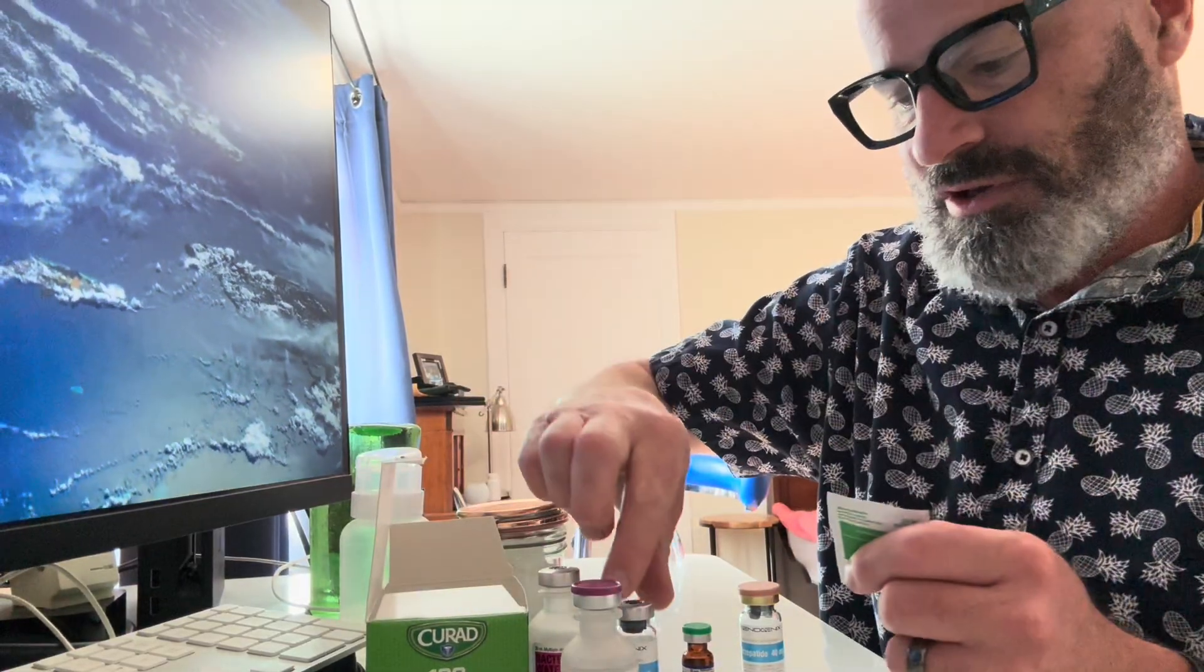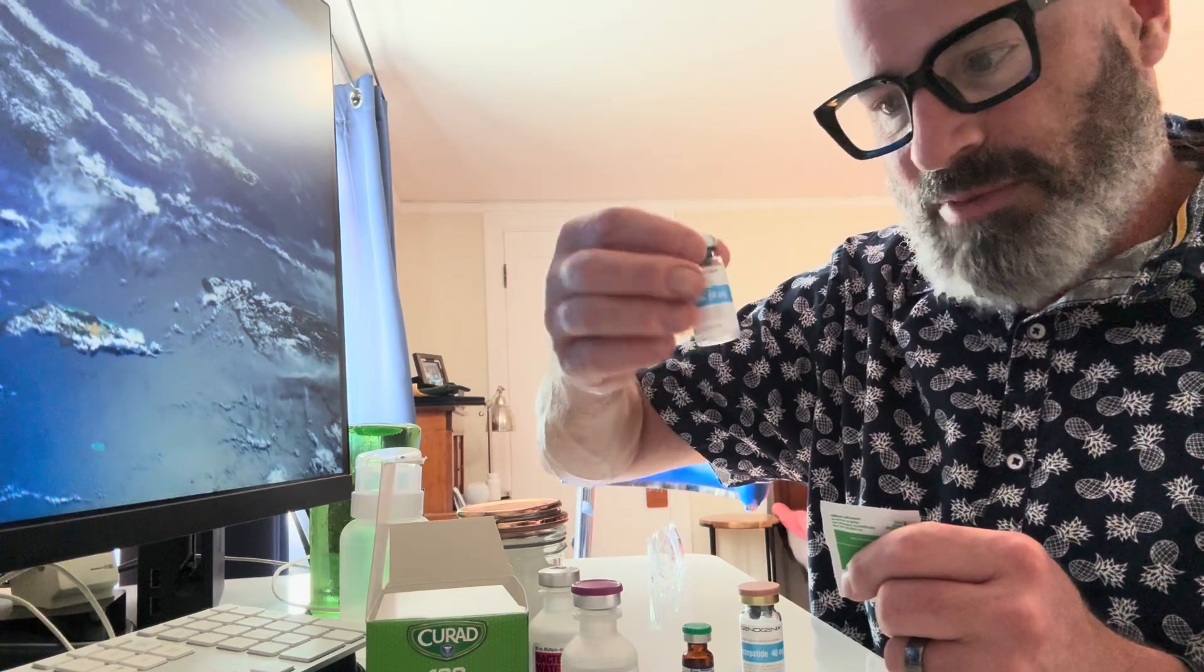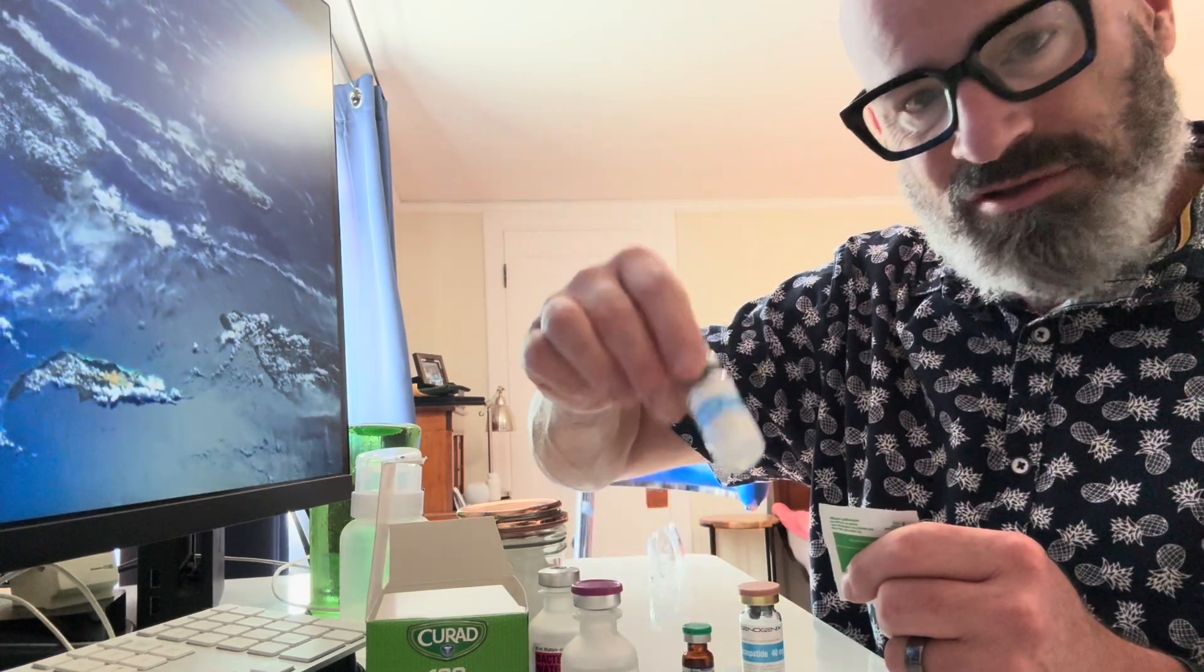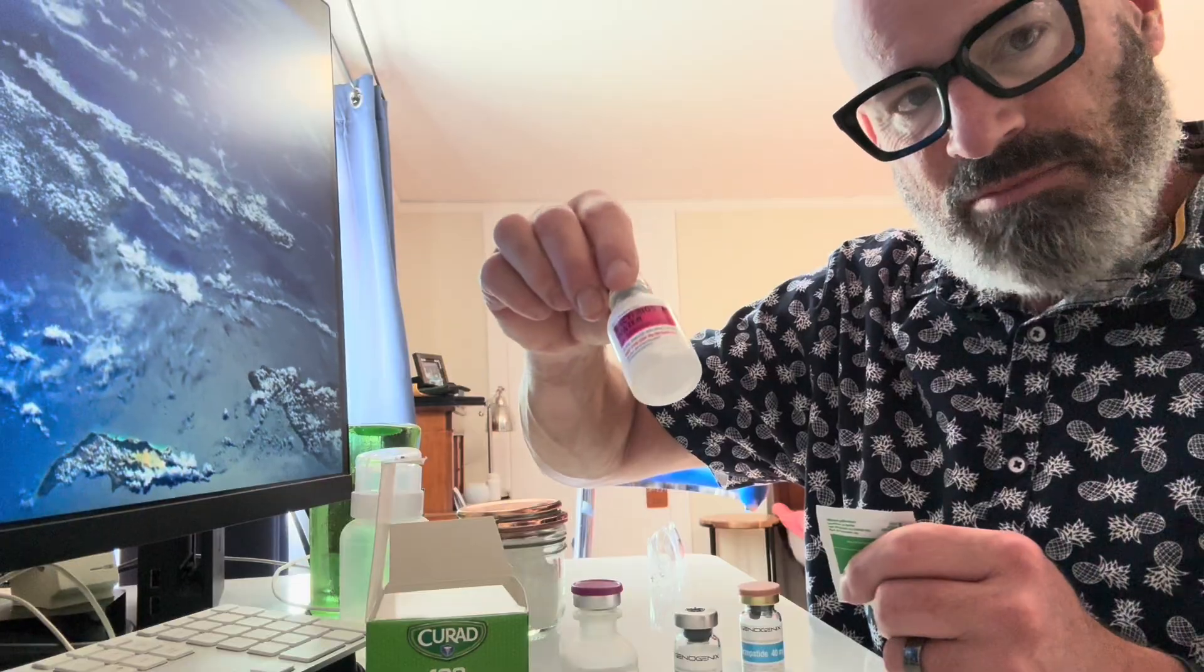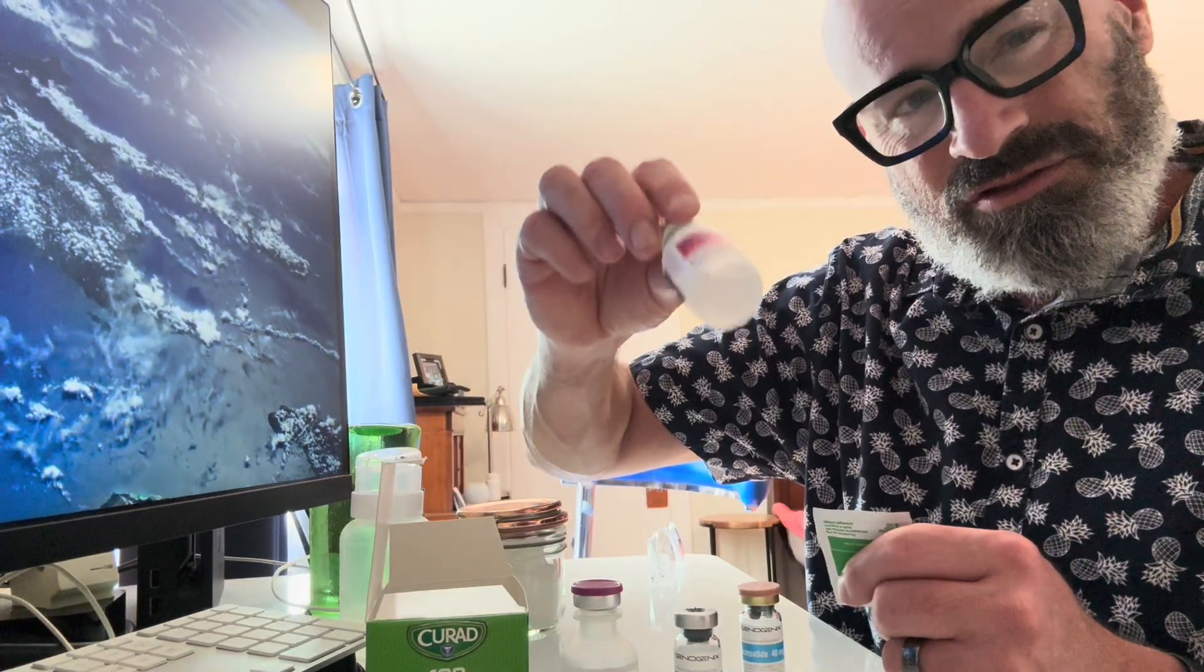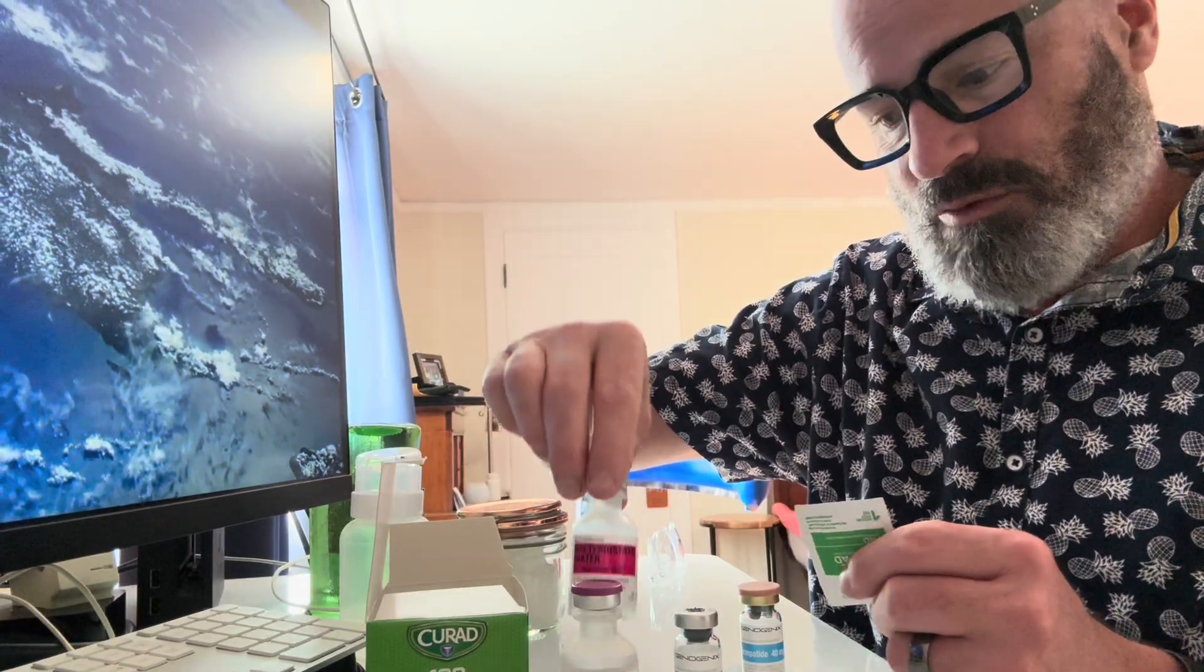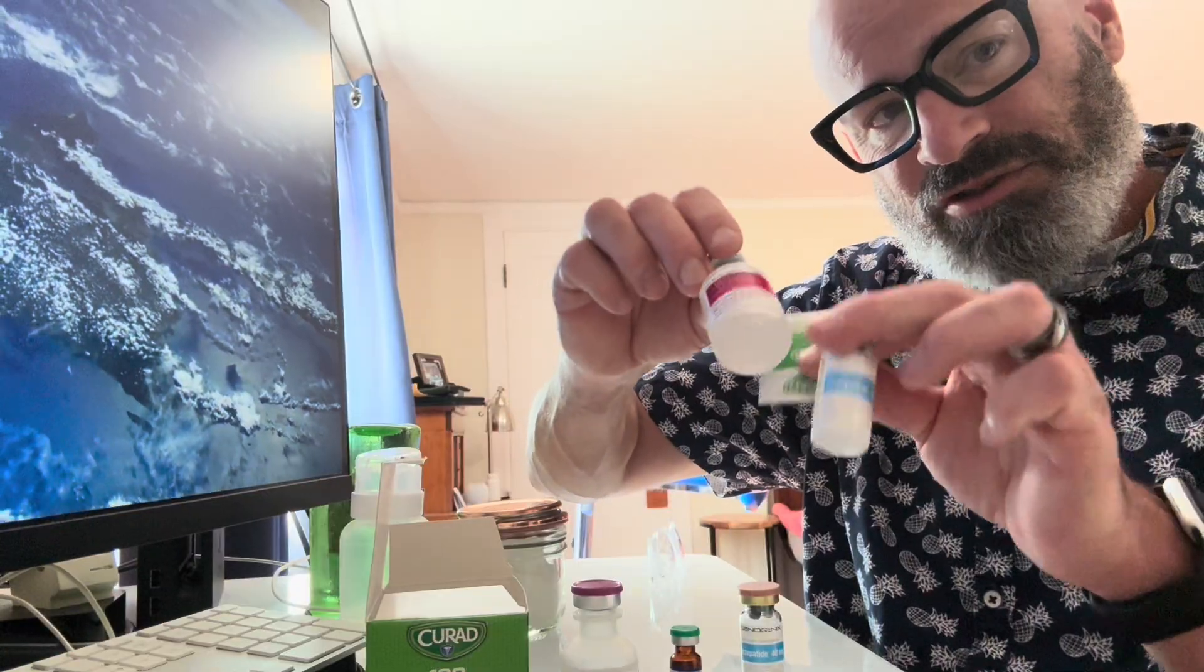You just take an alcohol swab. You clean the top of your peptide container, which usually comes in a powder form first, and then clean the top of your reconstitution solution. That's the bacteriostatic water. Very straightforward. You start with two vials.